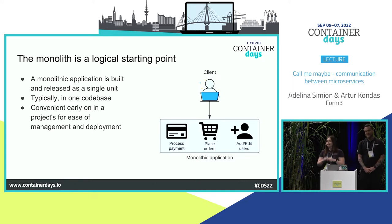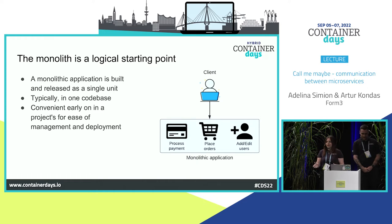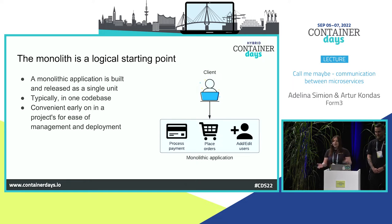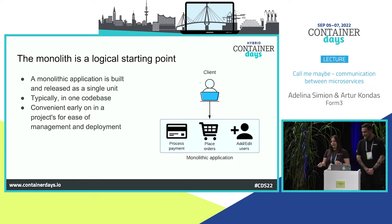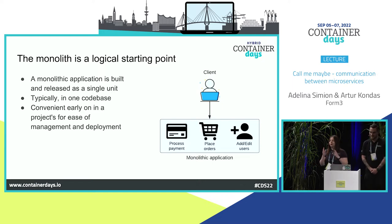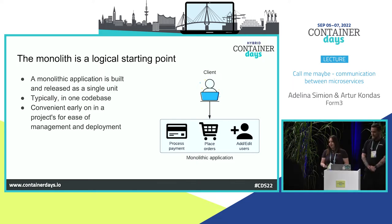Today we're looking at the typical startup story. A monolithic application is an application that is built and released as a single unit. Typically it's in one code base, but it can be divided into multiple repositories. Think about what's going to fall over in the case of a bad commit — if the answer is everything, then you're working in a monolith. We're not disputing that the monolith is a logical starting point when you're first building out an application.